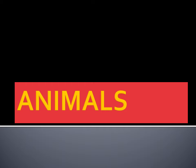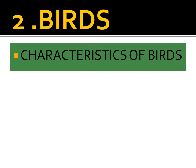We said vertebrates are animals with a backbone which runs from the head to the tail. Today we want to see birds — characteristics of birds. When you were in class 4, the teacher defined for you what a characteristic is, whereby characteristics are behaviors shown by animals, and animals have different characteristics.